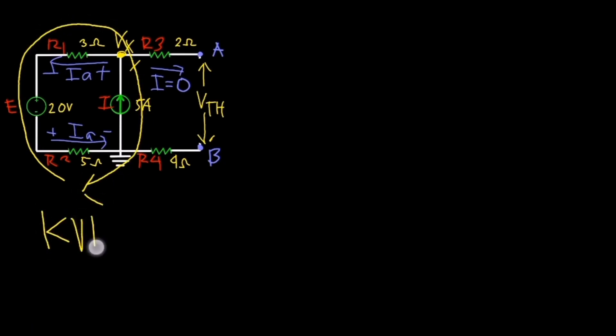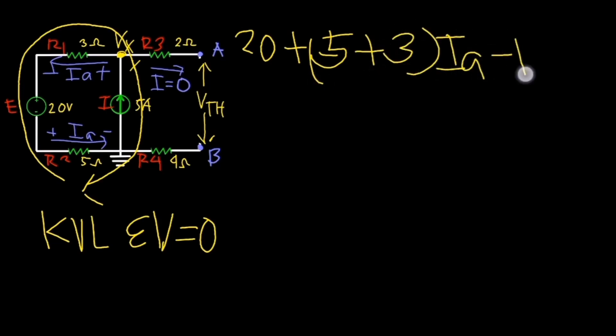We all know that summation of voltage at this loop is equal to zero. The equation will be 20 plus 5 plus 3Ia minus Vx equals zero. Simplifying this equation will yield 20 plus 8Ia equals Vx.